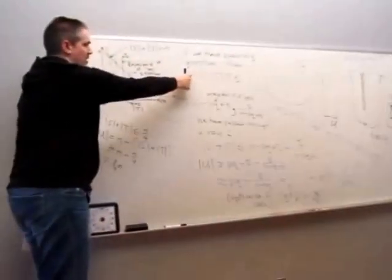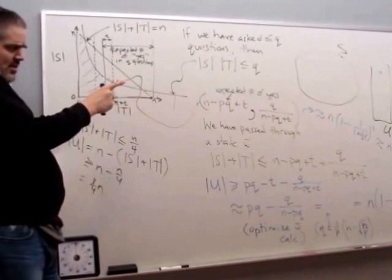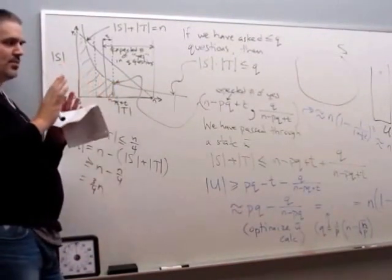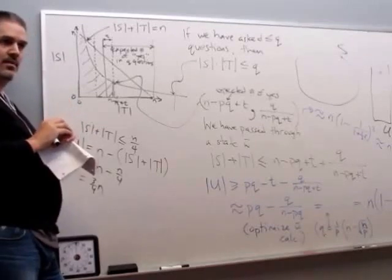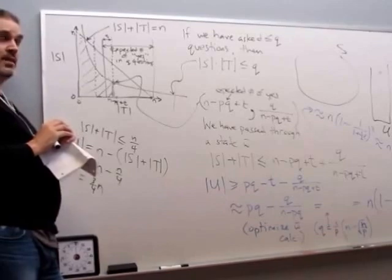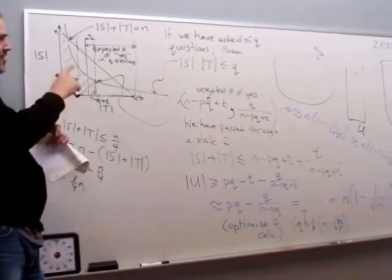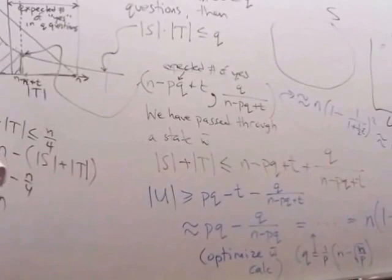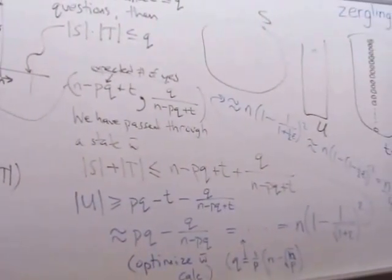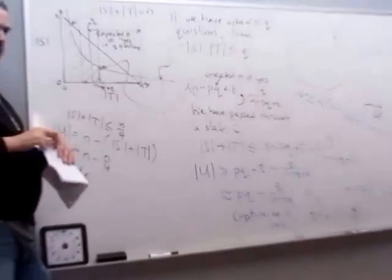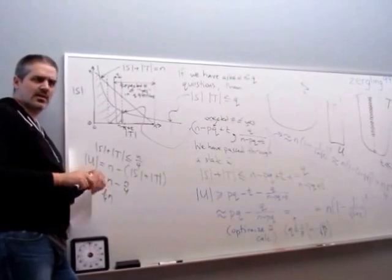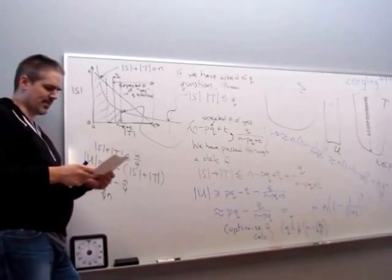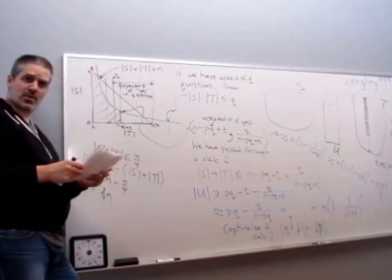That's the proof's main idea for the large component case. The crucial ideas are: first, this nice trick that the state space has a boundary region; second, the business about the number of yeses being close to the average. The key factor is with high probability we get this many yes answers, meaning we'll have at least that many removals from T, putting us away from the corner and into the large component region.